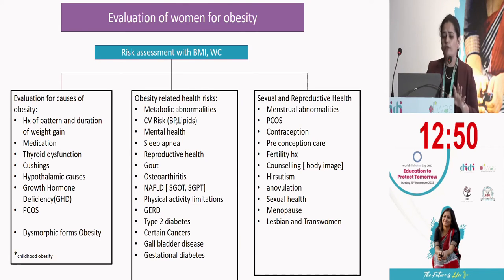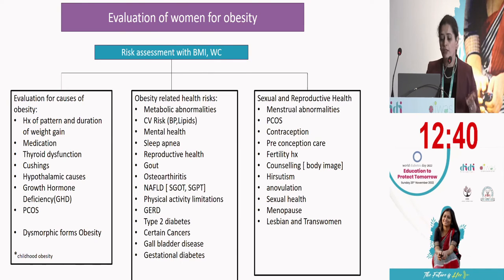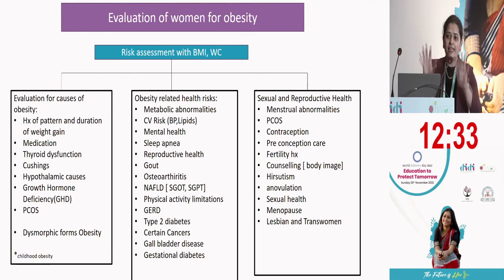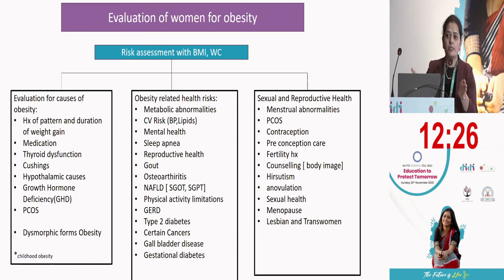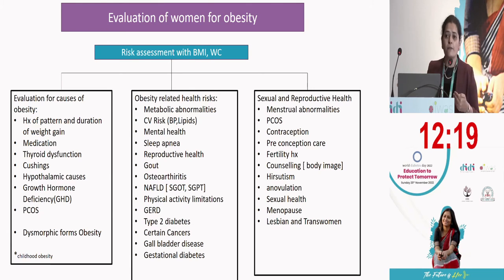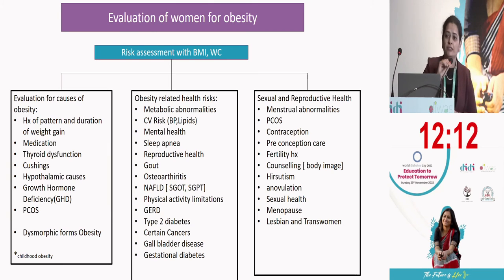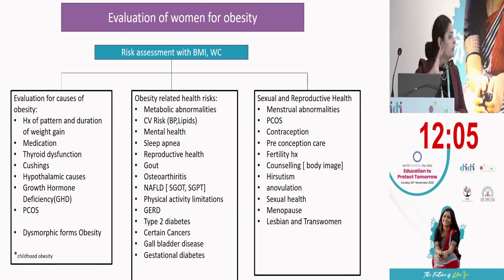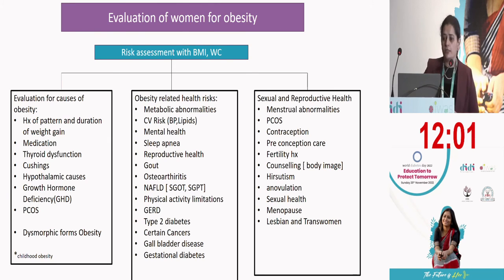There is a proposal of evaluating the cause of obesity in terms of history, pattern, and duration of weight gain. Then we consider medications, thyroid dysfunction, Cushing syndrome, hypothalamic causes, growth hormone, PCOS, and dysmorphic forms of obesity. We need to evaluate whether it is constitutional obesity or whether the obesity is caused by certain hormonal or non-hormonal secondary causes. We'll ask one of the discussants to talk about who are the people in whom secondary causes for obesity need to be looked for.